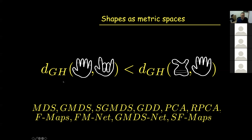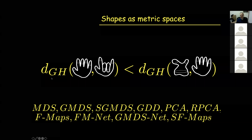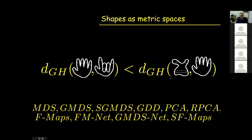This is called the Gromov-Hausdorff distance, and this is something my group and I have been engaged with for about 15 years. What we wanted to show is that if you take a hand treated as a metric space in different poses, the distance between these two objects would be smaller than the distance between a completely different object and a hand.